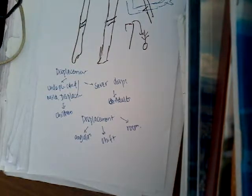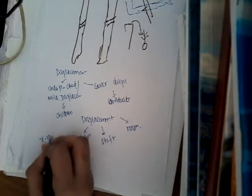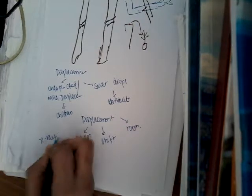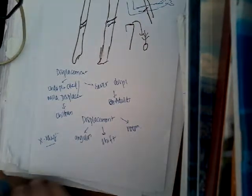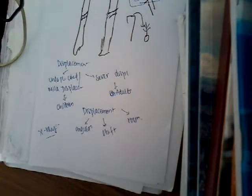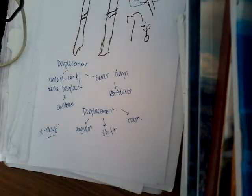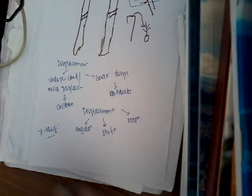On examination, you can find there is tenderness. Then you will order for an X-ray of the forearm including the elbow joint and the wrist joint. In this, you will find the presence of a fracture line. That is what you see in X-ray.